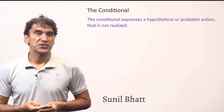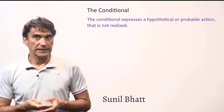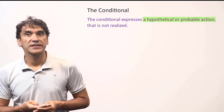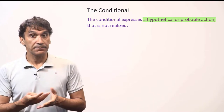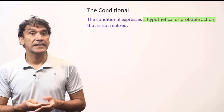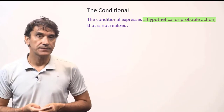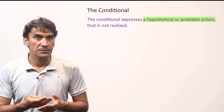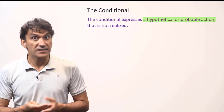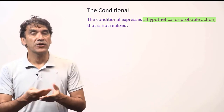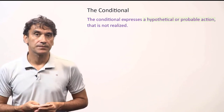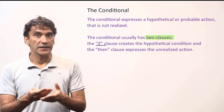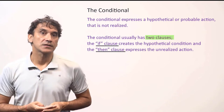The next grammar point is the conditional mood. The conditional expresses a hypothetical or a probable action that is not realized — that means something that could have happened but did not happen. The action would have happened if the conditions were met; since the conditions were not met, it did not happen. The conditional usually has two clauses: the if clause and the then clause.